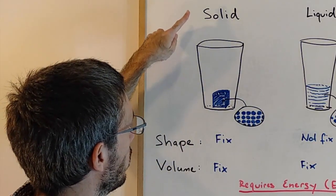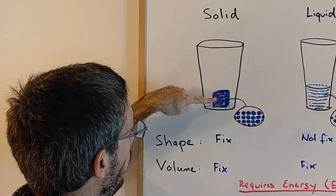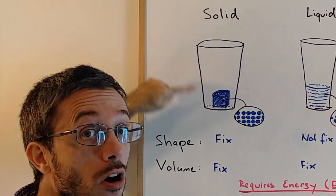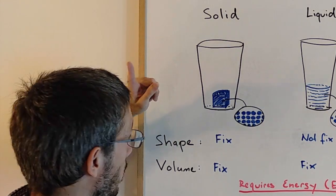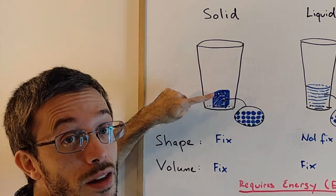Now, when something is a solid, the shape of the matter does not depend on the container. It is fixed. Also, the volume is fixed. I could put this little cube of solid matter in a bigger container. It would have exactly the same shape and the same volume.